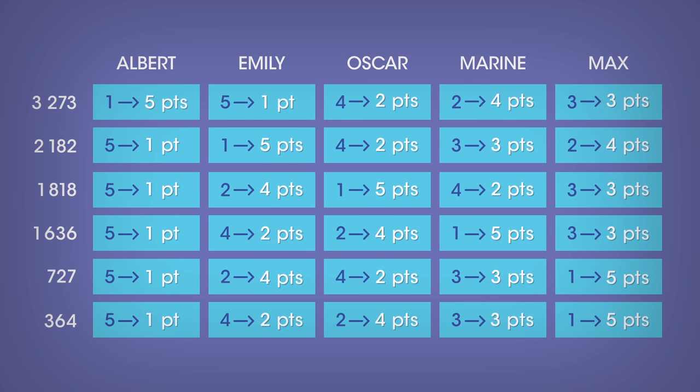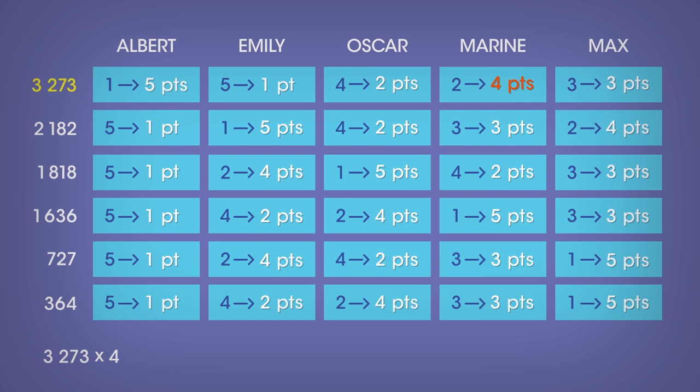Let's check the points of Maureen using the grid. We do 3,273 times 4, plus 2,182 times 3, plus 1,818 times 2, plus 1,636 times 2, plus 727 times 3, plus 364 times 3, leading us to a total of 34,727 points.